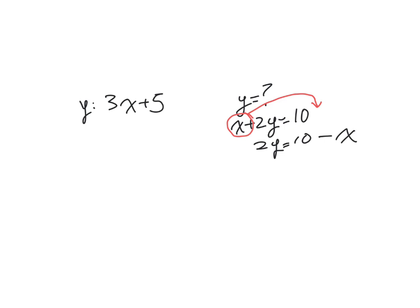Now, in order to get y by itself, we have to divide everything by 2. So 2y divided by 2, 10 divided by 2, and remember, this is a 1, and we're going to divide it by 2. So it's 1x divided by 2.